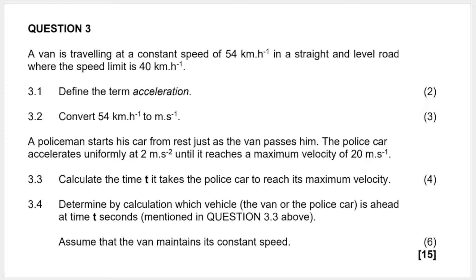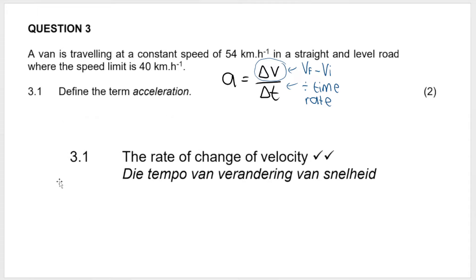They say a van is traveling at a constant speed of 54 kilometers per hour in a straight and level road where the speed limit is 40 kilometers per hour. My first question is a definition - you need to study your definitions grade 10s. It says define the term acceleration, and you need to know that acceleration is the rate of change of velocity. If you forget that, remember the simple calculation for acceleration looks like this: rate means dividing by time. It's the rate of change of velocity. Velocity is changing - remember this is final minus initial, which is representing a change.